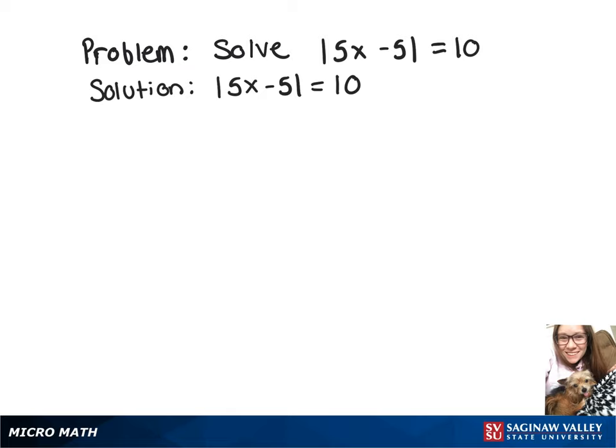In this video, we're going to solve the absolute value of 5x minus 5 equals 10. So what that means for us is that we have 5x minus 5 equals 10 or 5x minus 5 equals negative 10.